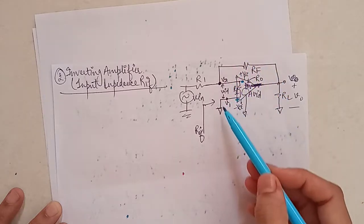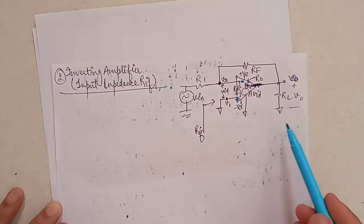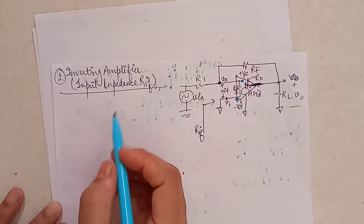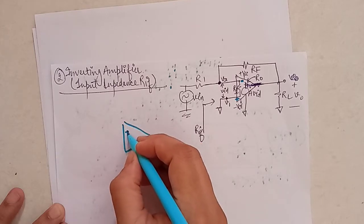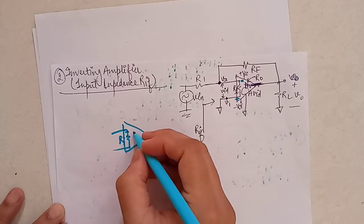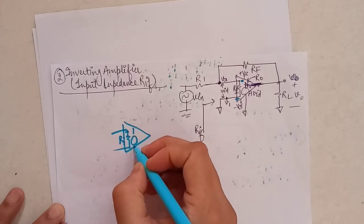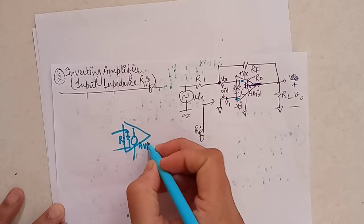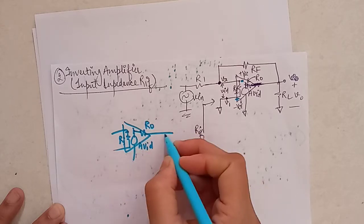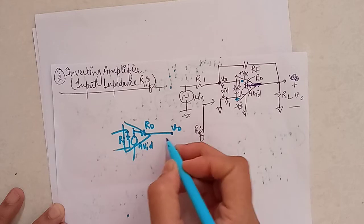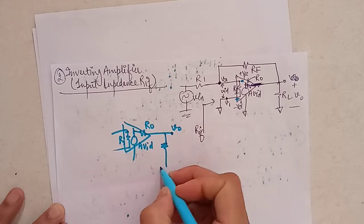So we can draw this diagram once again. So let's draw it. This is R note, this is V note.